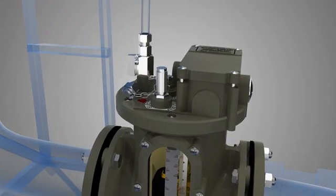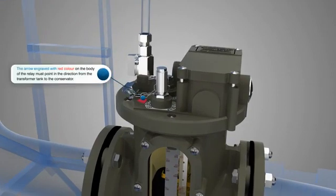When mounting, the arrow engraved with red color on the body of the relay must point in the direction from the transformer tank to the conservator.